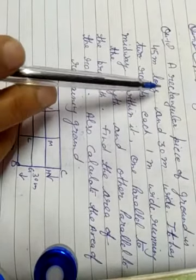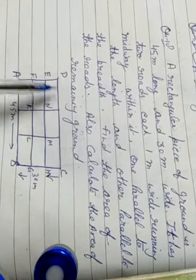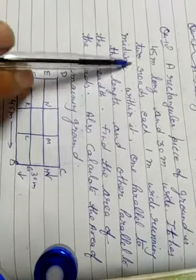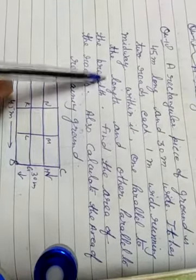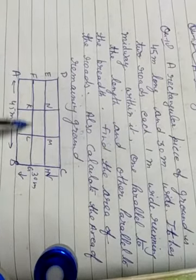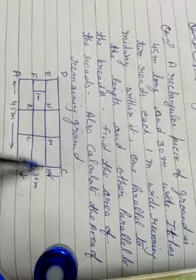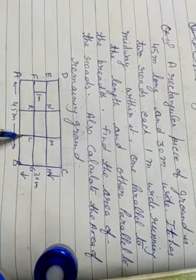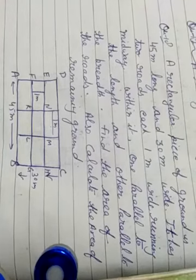Now question number 18. A rectangular piece of ground is 45 meters long and 30 meters wide. It has two roads, each one meter wide, running midway — one parallel to the length and one parallel to the breadth. So in the center there is a road of breadth one meter going parallel to the length side, and another road parallel to the width side, also with breadth one meter.